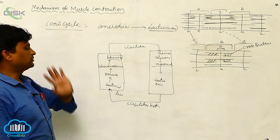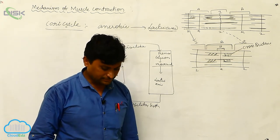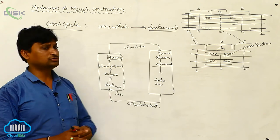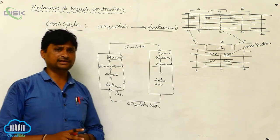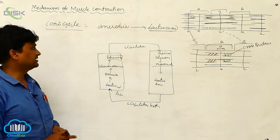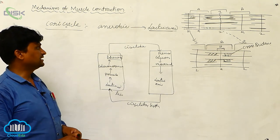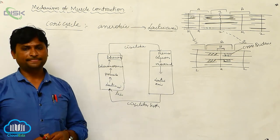This is about the Cori cycle. The muscles continuously show this activity. It is a fatigue condition, some anaerobic condition also. It shows this type of movement. Thank you very much.